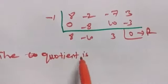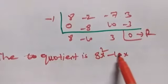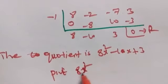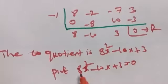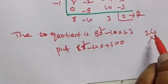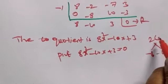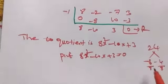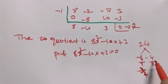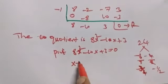The quotient is 8x² - 10x + 3 = 0. Factoring: 8x² - 6x - 4x + 3 = 0. This gives us 2x(4x - 3) - 1(4x - 3) = 0, so (2x - 1)(4x - 3) = 0.